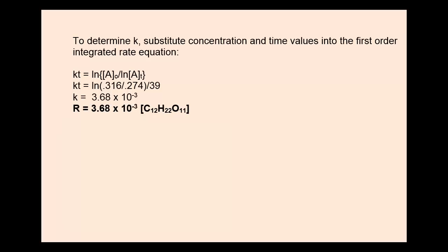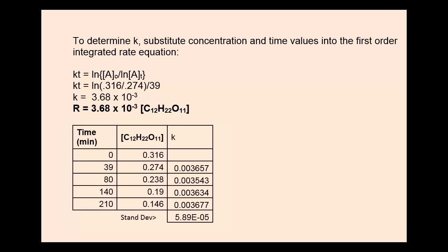Therefore, the rate law is 3.68 times 10 to the minus third times the concentration of the sucrose raised to the first power. You could have chosen other times, such as 80, 140, and 210, and calculated a k value very similar to what I have.